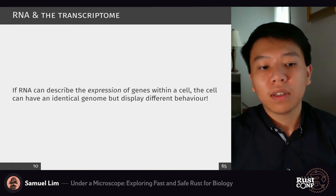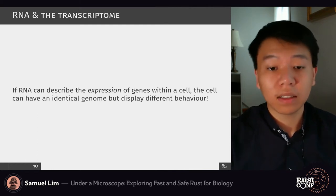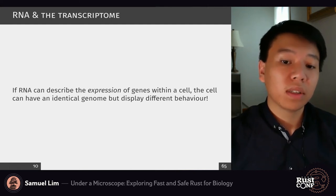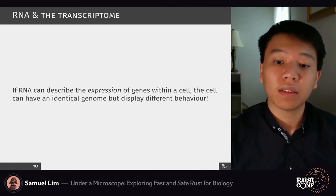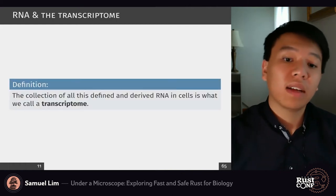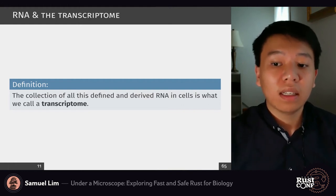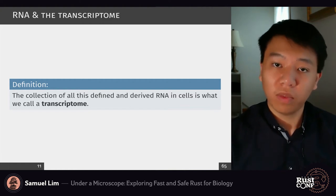If RNA can describe the expressions of genes within a cell, that means the cell can have an identical genomic sequence — an identical genome — but as it's changing, producing different proteins, going to different factories, and communicating differently, the cell can display different behavior even with the same genetics. So the collection of all this dynamic, transcribed RNA in these cells is collectively what we call a transcriptome.